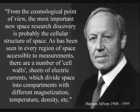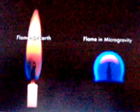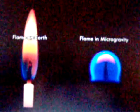As has been seen in every region of space accessible to measurements, there are a number of cell walls — sheets of electric currents — which divide space into compartments with different magnetization, temperature, density, etc. In this image from the International Space Station we can see that plasma in the form of a candle flame naturally forms a spherical, or cellular structure in zero gravity.